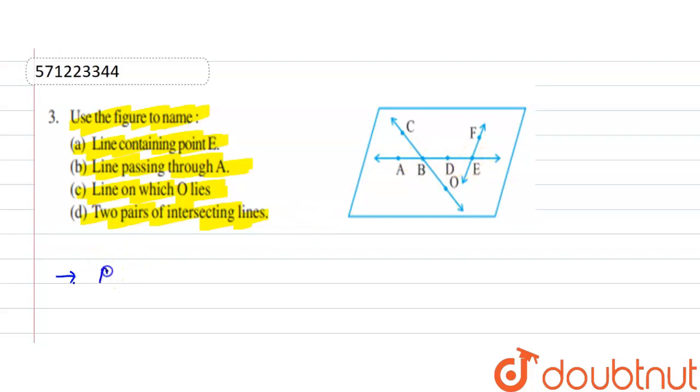Now next part is line passing through A. A line passing through A is AD and AB.